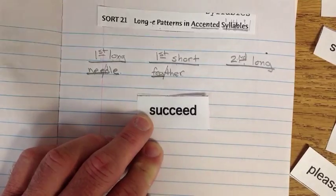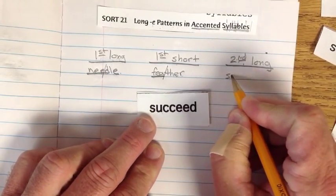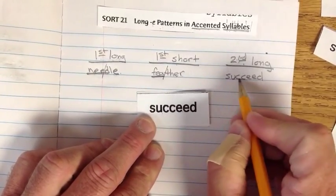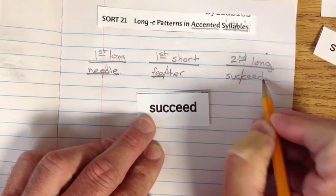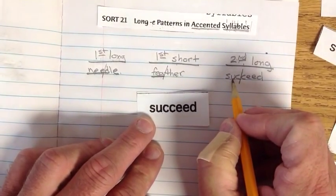So let's write it. S-U-C-C-E-E-D. Succeed. S-U-C-E-D. There's our first vowel. There's our second vowel sound.